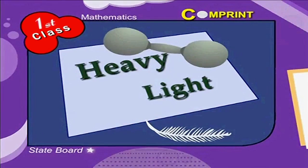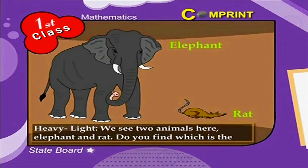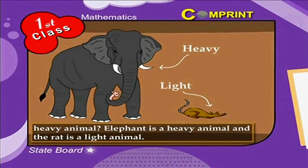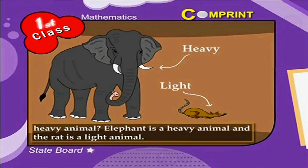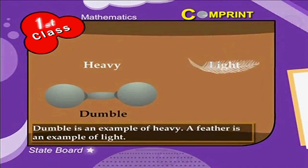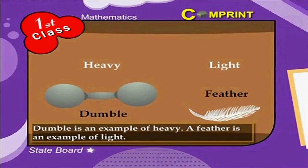Heavy and light. Now children, let us know the difference between heavy and light. We see two animals here — an elephant and a rat. Do you find which is the heavy animal? That's good — elephant! Elephant is a heavy animal and the rat is a light animal. Another example: a dumbbell is an example of heavy, and a feather is an example of light.